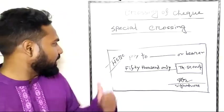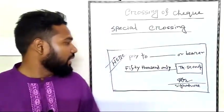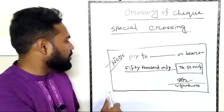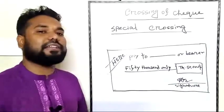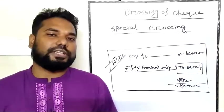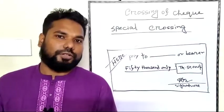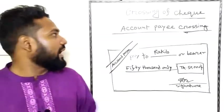Now account payee crossing. In this crossing, the lines are not the important part. What's important is having the bank account written. If you have a bank account specified, you will have a special crossing.